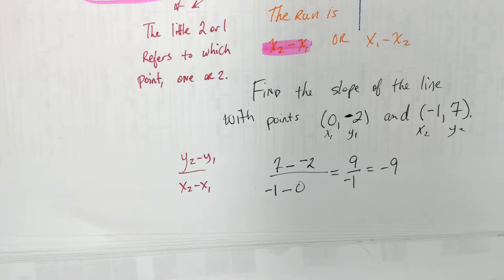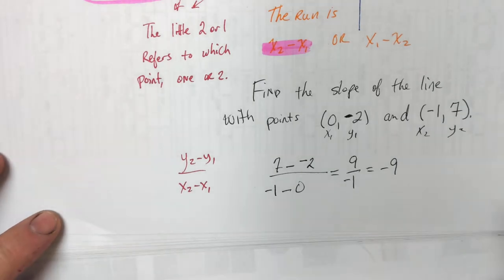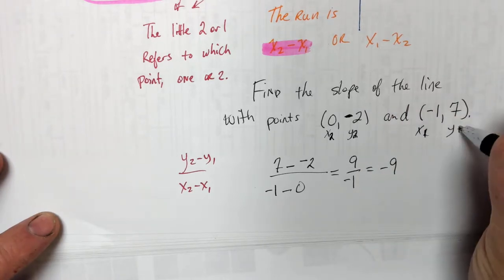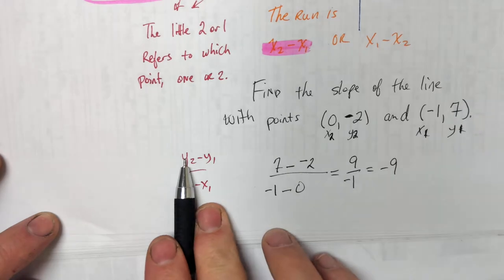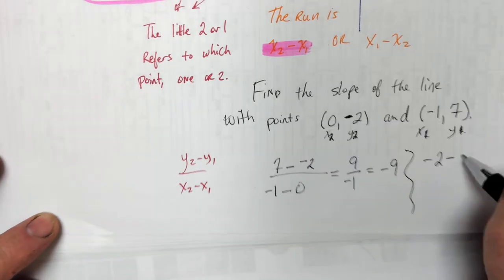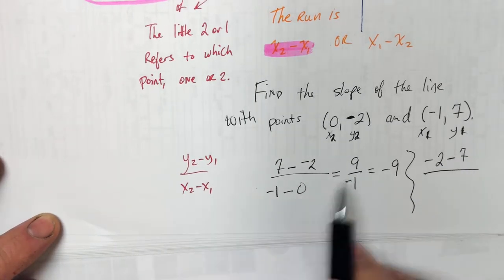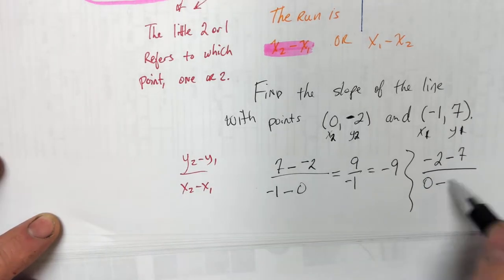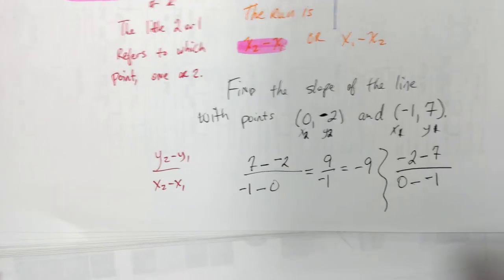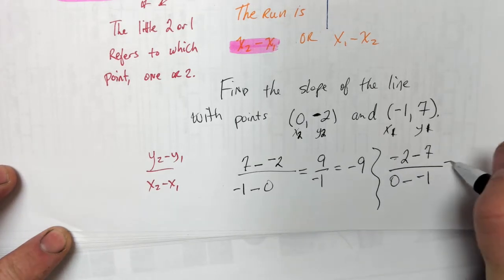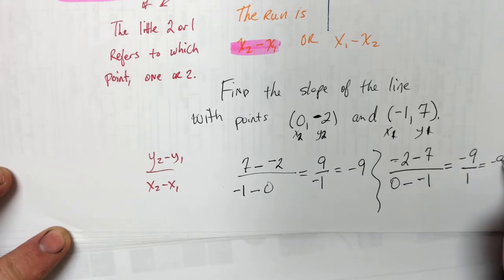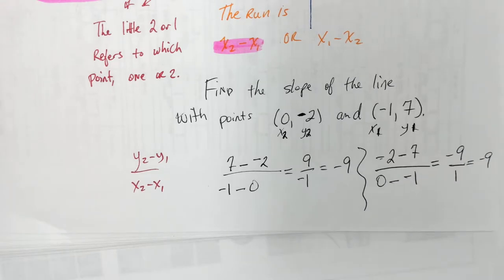Now we're going to switch it. The thing I want to show you is it doesn't matter which way you do it. So y2 is negative 2, minus y1 which is 7. x2 is 0, minus x1 which is negative 1. Negative 2 minus 7 equals negative 9; 0 minus negative 1 is positive 1. So that's still negative 9 — same answer two different ways. That means we're probably right.